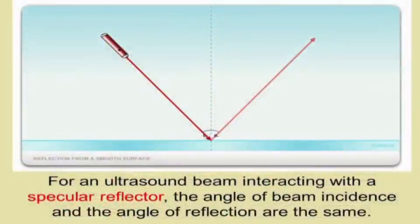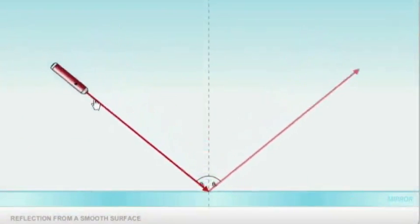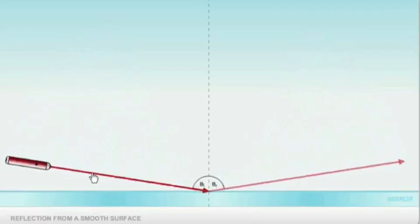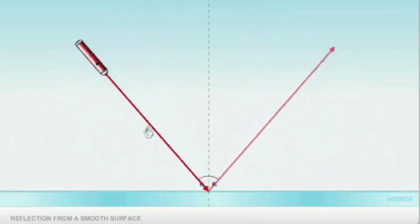So for an ultrasound beam interacting with a specular reflector, the angle of the beam incidence, the angle coming in, is equal to the angle going out. And there's actually a website that lets you play with that a little bit, although it's pretty straightforward, where you can just, and this one may take a minute to load, you can just see that as we vary the angle of the beam coming in, then we get exactly the same angle reflected in the beam going out.